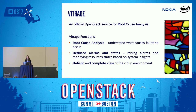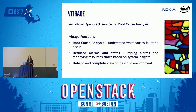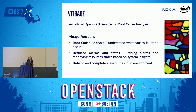Vitrage is an official OpenStack service for root cause analysis. It is used to organize, analyze, and expand OpenStack events and alarms. A cloud operator facing a fault may see a very large list of alarms and find it hard to understand the root cause — this is where Vitrage can help. Another role of Vitrage is to report alarms on problems not directly monitored in the system. For example, in case of a physical NIC failure, Vitrage can identify the VMs affected by this failure and report that they are currently unreachable. Vitrage provides a holistic and complete view of the system, including the physical layer, the virtual layer, and the application layer, and you can clearly see the relationship between these layers.